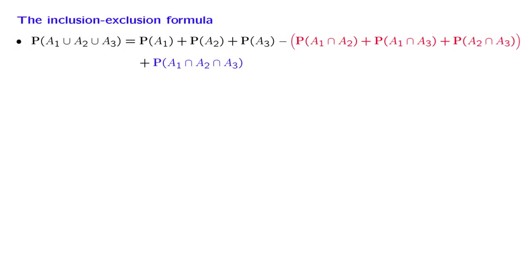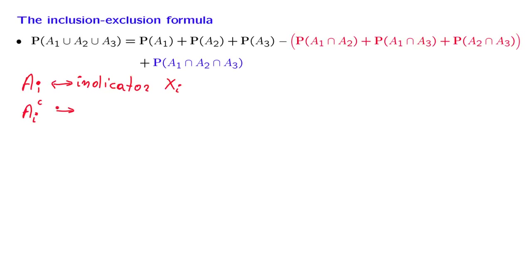Here is the formula that we want to establish. To any set or event, we can associate an indicator function. For set ai, the indicator function xi equals 1 when the outcome is inside the set and 0 when outside. The indicator function of the complement is 1 minus xi: if the outcome is in the complement, xi equals 0 and the expression equals 1; if the outcome is inside ai, xi equals 1 and the expression equals 0.